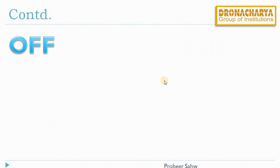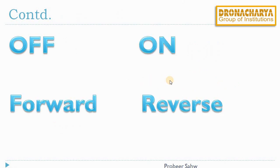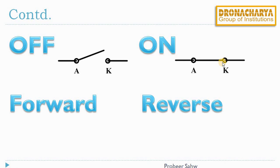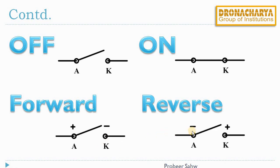Apart from the off and on state of a switch, we can have forward and reverse modes. In the off condition, the switch is open so there will be no current flowing through it. In the on condition, the switch will be closed and there will be a current flowing through the switch. When a switch is set to be forward, it means the anode terminal is at higher potential than the cathode terminal. When it is set to be reverse, the anode is at lower potential than the cathode. So with this combination of off, on, forward, and reverse, we have various switch configurations.